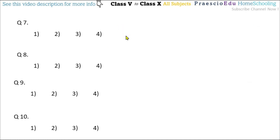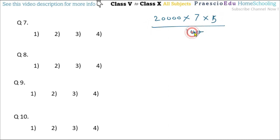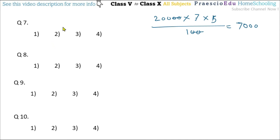Question number 7: Swara deposited ₹20,000 in a bank at the rate of 7% per annum. How much interest will she receive after 5 years? I = 20000 × 7 × 5 / 100. The two zeros cancel, giving 200 × 7 × 5 = 7000. The interest is ₹7000 — option number 2.